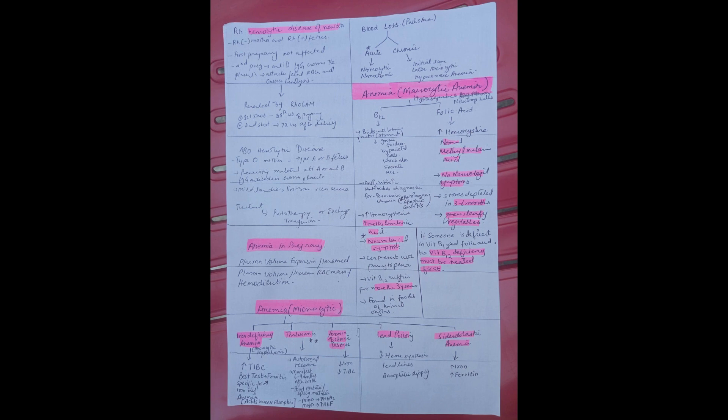Point mutation and splicing mutation occur in thalassemia. In minor thalassemia, hemoglobin A2 is increased, whereas in major thalassemia, fetal hemoglobin is increased.